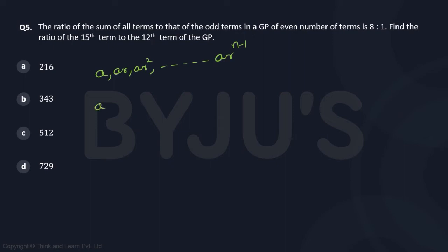If I take only the odd terms, I will have a, ar², ar⁴, and so on.